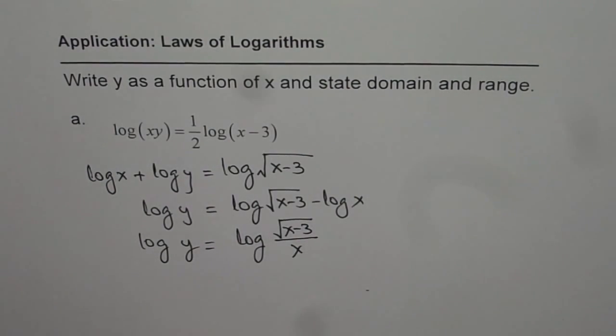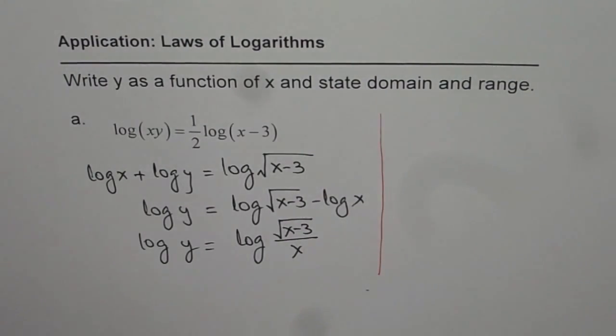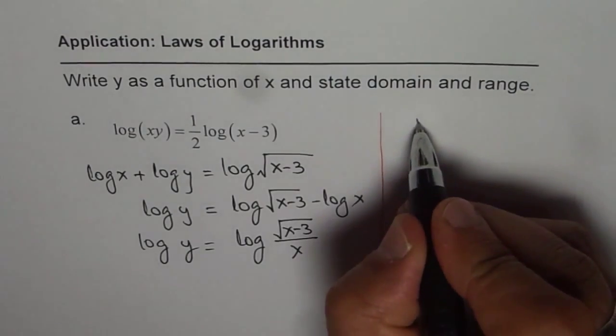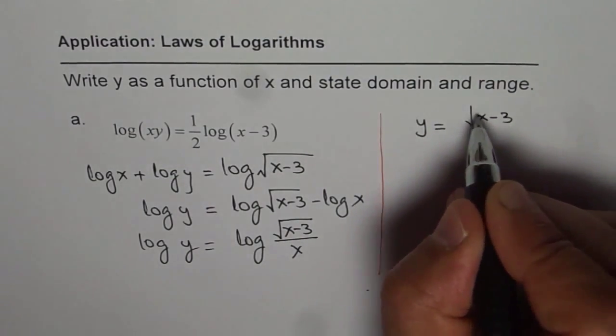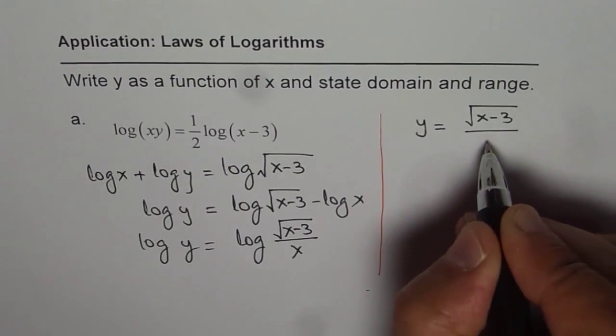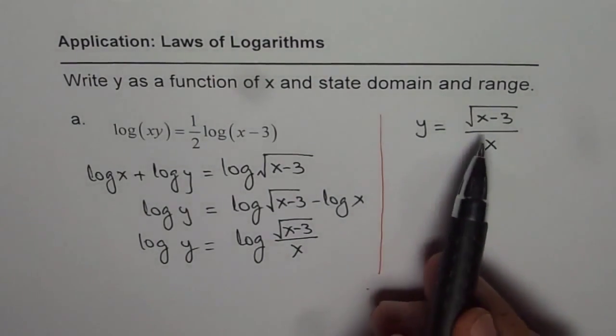Now since both the logs should be same, we get our result. That is, y is equal to square root of x minus 3 divided by x. So that is the function y in terms of x.